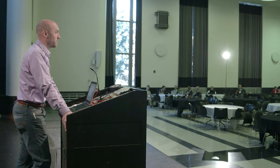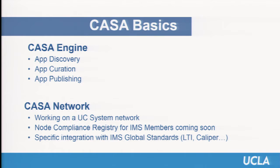So what does CASA provide? It provides app discovery, curation, and publishing. It allows the instructor to go to this app store, browse apps they might want to use, and put them into their course. CASA is a separate application that has to be running on a server. It's open source — we have the code on GitHub, it's called CASA on Rails. If you have the expertise to run Ruby on Rails applications, you can download and run it. Once the instance of CASA is up and running, you connect it to Moodle and you're off to the races.